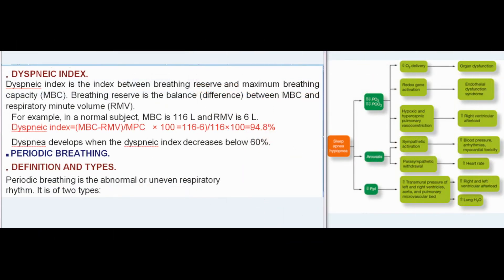The dyspneic index is the index between breathing reserve and maximum breathing capacity (MBC). Breathing reserve is the difference between MBC and respiratory minute volume (RMV). For example, in a normal subject, MBC is 116 L and RMV is 6 L. Dyspneic index = (MBC − RMV) / MBC × 100 = (116 − 6) / 116 × 100 = 94.8%. Dyspnea develops when the dyspneic index decreases below 60%.